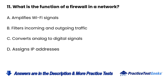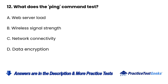Question 11: What is the function of a firewall in a network? A. Amplifies Wi-Fi signals. B. Filters incoming and outgoing traffic. C. Converts analog to digital signals. D. Assigns IP addresses.